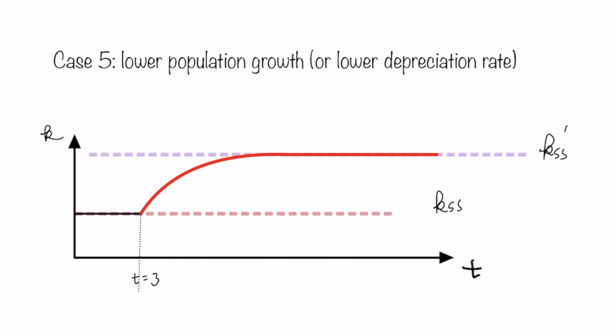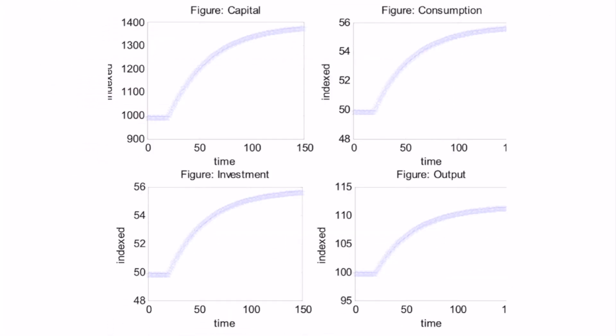The economy moves from the original steady state to a new steady state that is higher than the original level. How does that affect all the other variables? Given that output is a function of k, and given that consumption is a fixed portion of output and investment is a fixed portion of output, the transition time paths for consumption, investment, and output all have the same pattern as the time path for capital stock per capita.